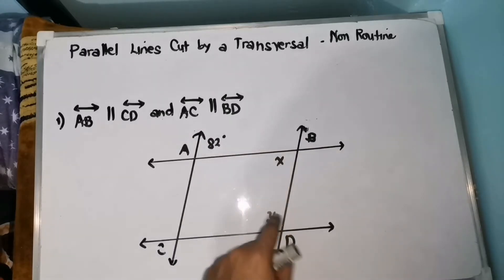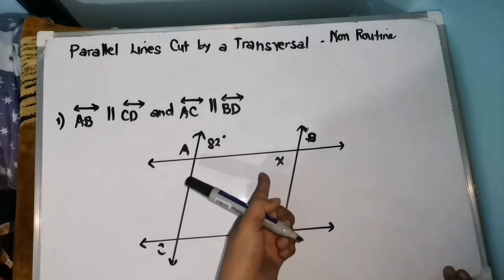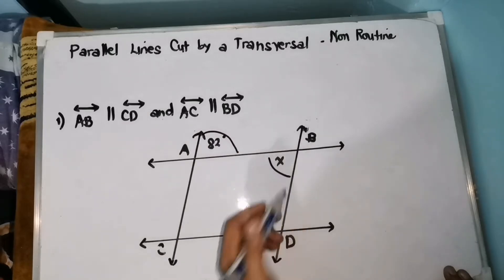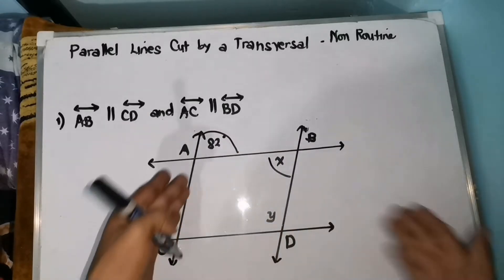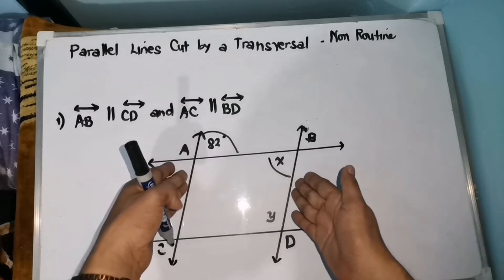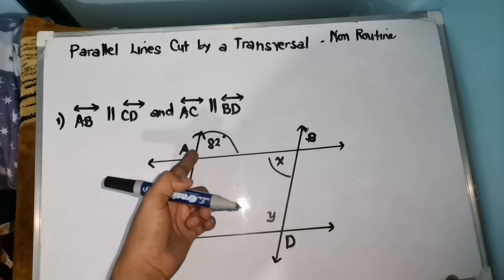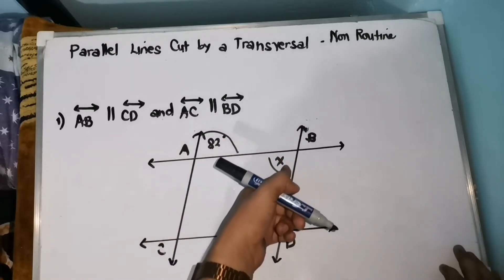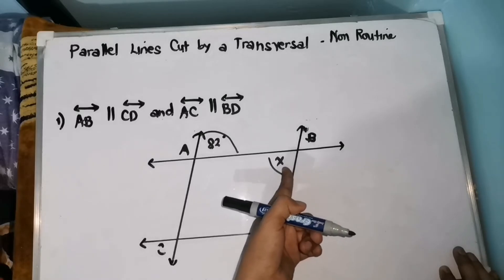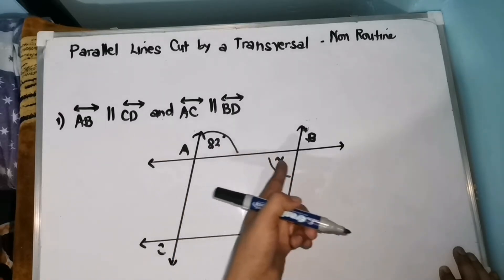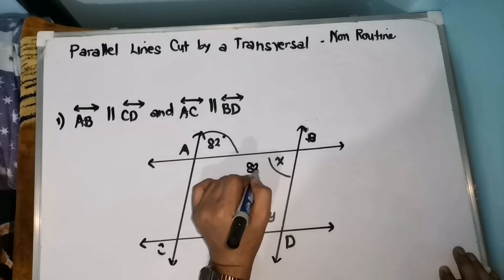Let us first find the value of X. Ano ang relationship ni 82 degrees kay X? Wherein ito yung ating parallel lines, tapos itong nasa taas yung ating transversal line. Therefore, itong 82 degrees at itong X ay alternate interior angles. And according to the property, alternate interior angles are congruent. Since ito ay 82 degrees, therefore the value of X must be 82 degrees.